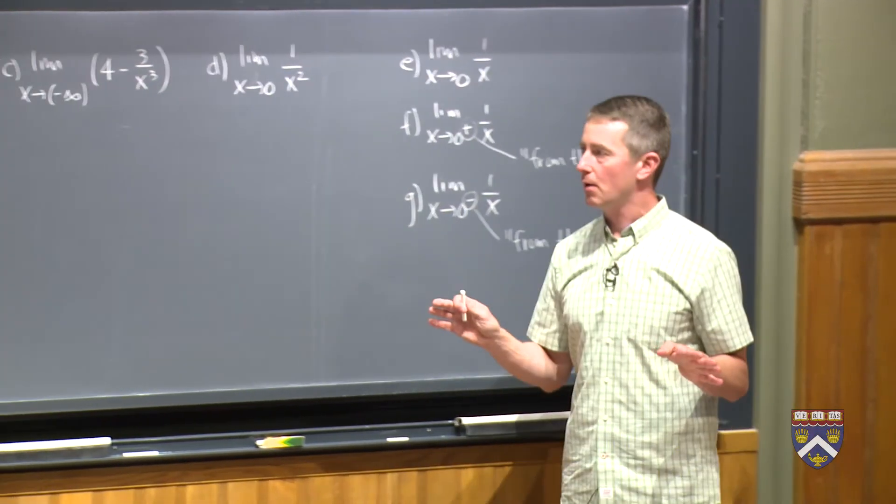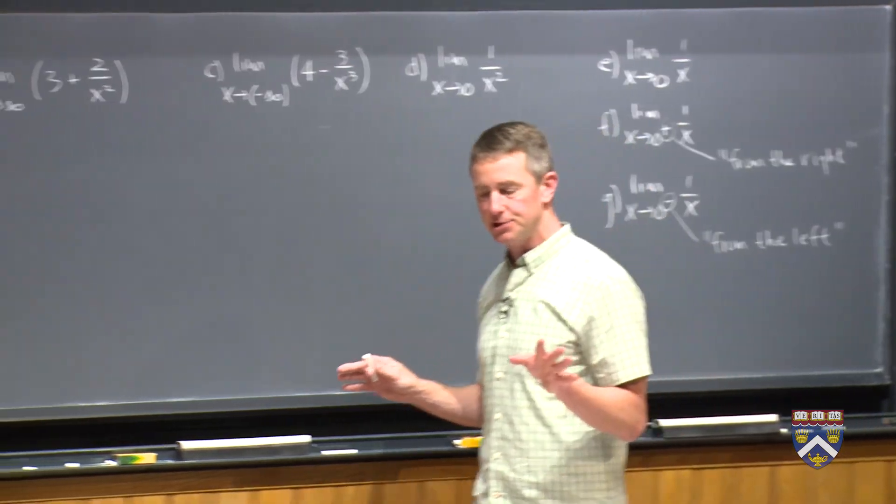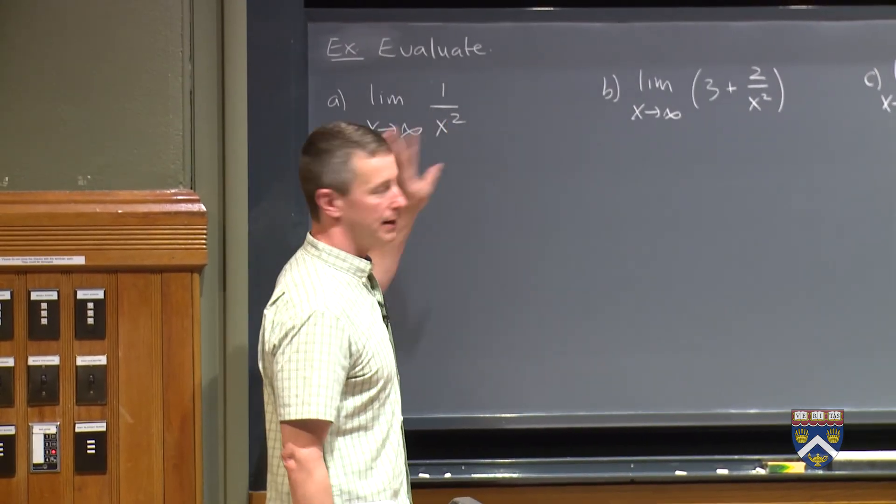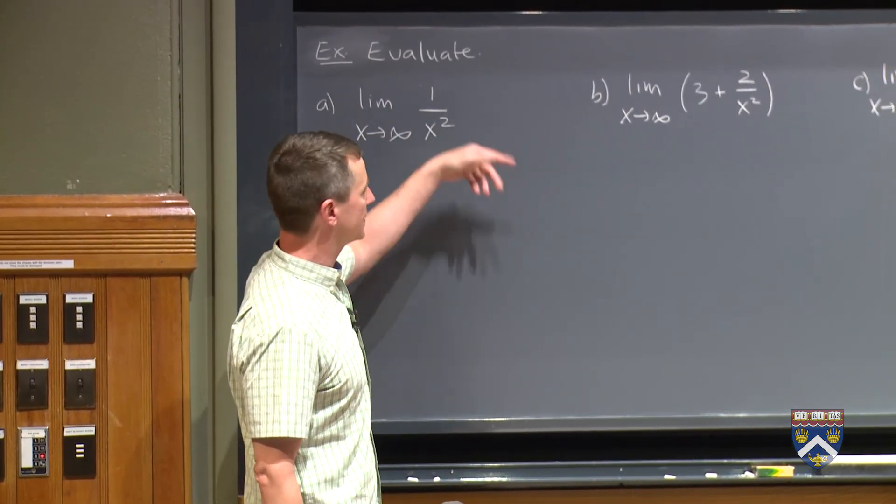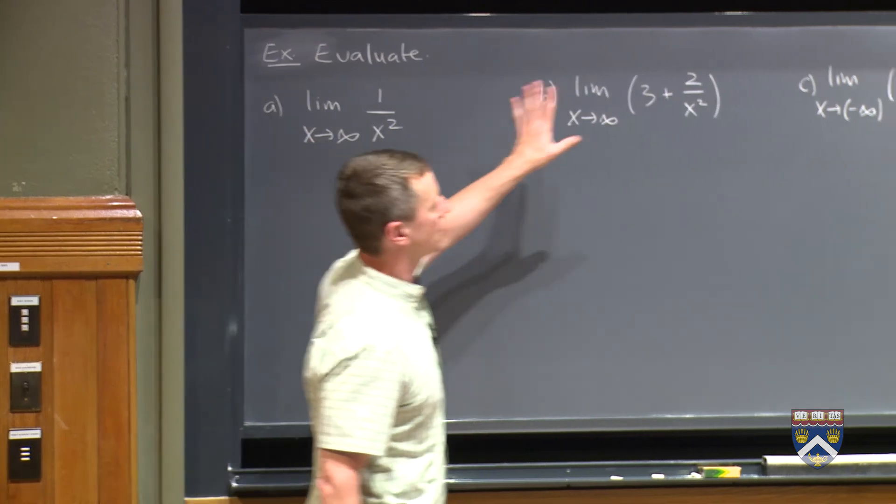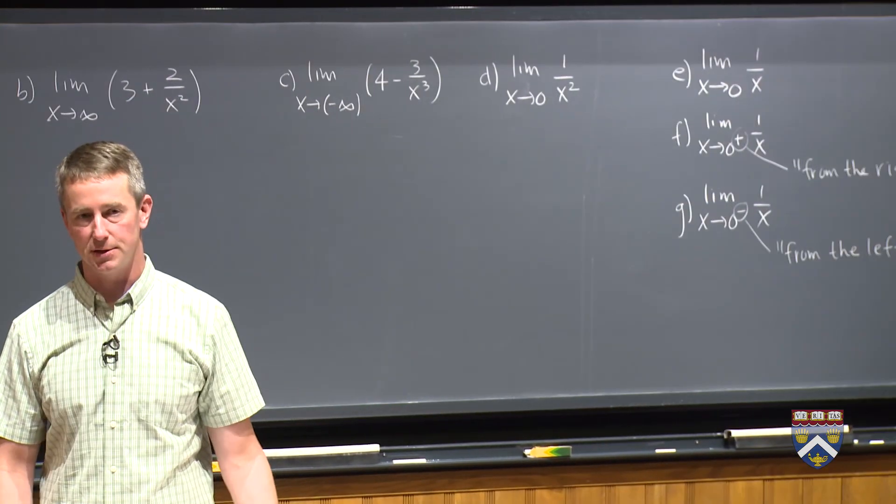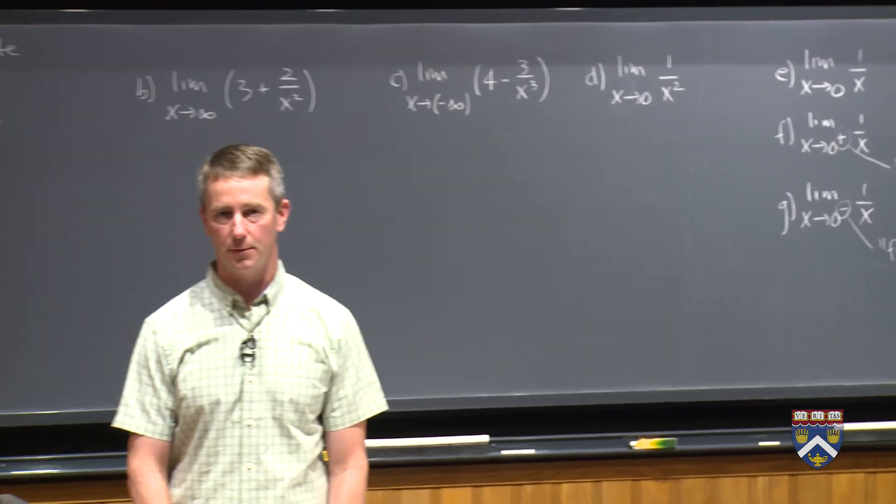So we have an applet now that allows you to change different parameters in the power functions. Start with this one, look at its graph, try to figure out what you think this limit is, and then go on to this one and this one. All of these, come up with your answers, and then we'll come back and we'll compare our answers.